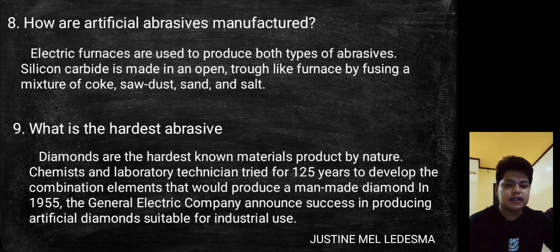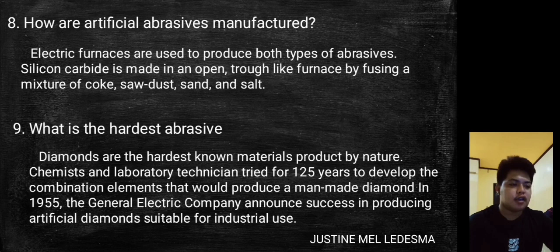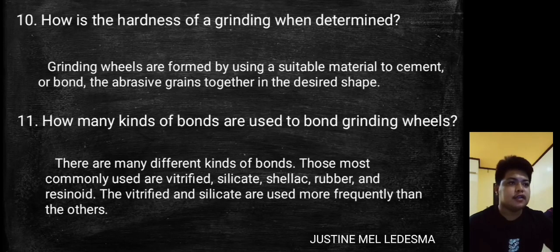Diamonds are the hardest known materials produced by nature. Chemists and laboratory technicians tried for 125 years to develop the combination of elements that would produce a man-made diamond. In 1955, the General Electric Company announced success in producing artificial diamonds suitable for industrial use. Grinding wheels are formed by using suitable materials to cement or bond abrasive grains together in a desired shape.